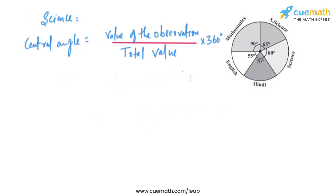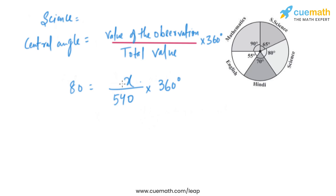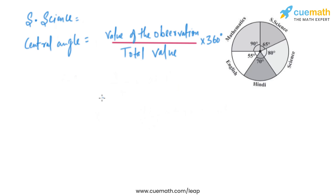Now let's move on to Science. The central angle is 80 degrees. So, 80 equals the marks obtained in Science divided by 540, multiplied by 360 degrees. Solving this, the marks obtained in Science is 120 marks.